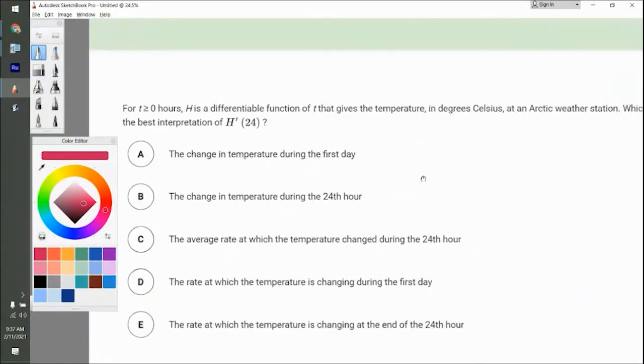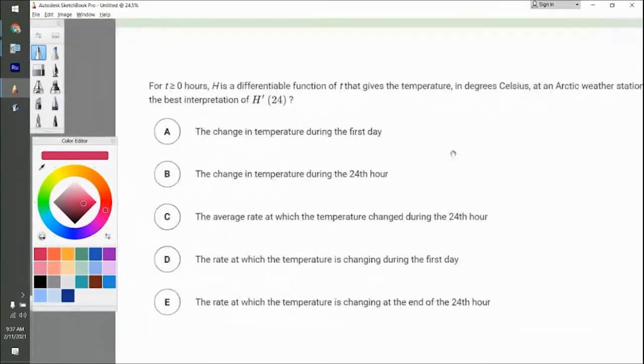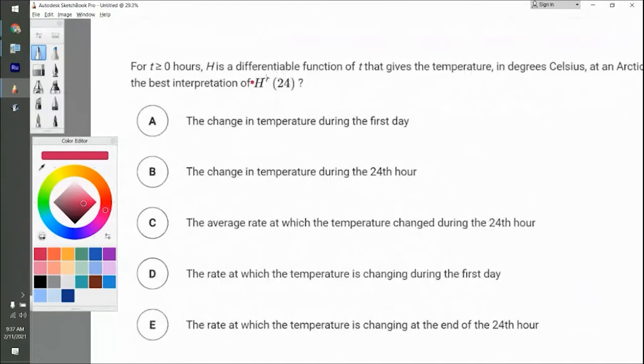So T is greater than or equal to zero hours. So you can't have negative time in this universe, apparently. Which of the following is the best interpretation? H prime of 24. Let's look at A. It says the change in temperature during the first day. It's never going to be just the change, which kind of gives away for B. Because the derivative is the rate of change. It's not just how much it changes.